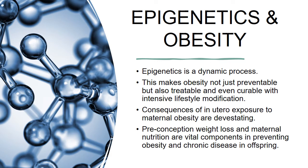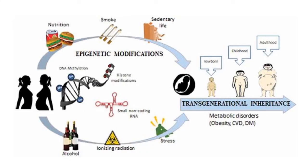Epigenetics is a dynamic process. This makes obesity not just preventable but also treatable and even curable with intensive lifestyle modification. The consequences of in utero exposure to maternal obesity are devastating. Pre-conception weight loss and maternal nutrition are vital components in preventing obesity and chronic disease in offspring. The following image shows transgenerational inheritance of metabolic disorders such as obesity, cardiovascular disease, and diabetes mellitus.